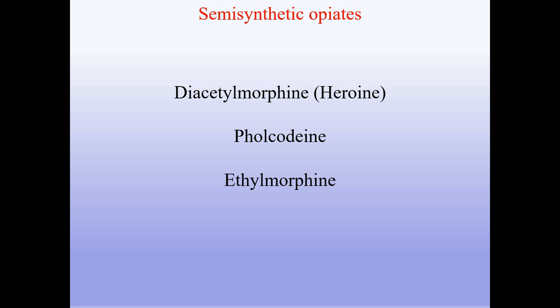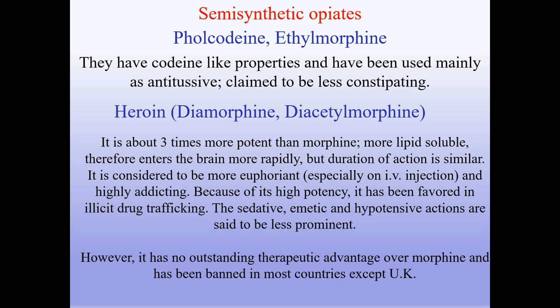Semi-synthetic opiates include diacetylmorphine (heroin), pholcodine, and ethylmorphine. Pholcodine and ethylmorphine have codeine-like properties and are used mainly as antitussives, claimed to be less constipating. Heroin (diamorphine, diacetylmorphine) is about three times more potent than morphine, more lipid-soluble, therefore enters the brain more rapidly, but duration of action is similar. It is considered more euphorigenic, especially on IV injection, and highly addicting. Because of its high potency, it has been favored in illicit drug trafficking. The sedative, emetic, and hypotensive actions are said to be less prominent. However, it has no outstanding therapeutic advantage over morphine and has been banned in most countries except the UK.